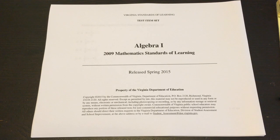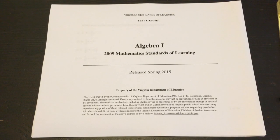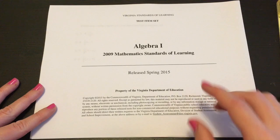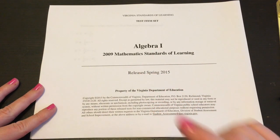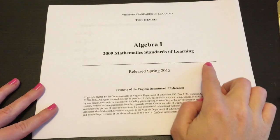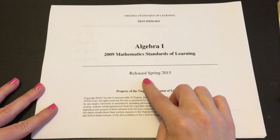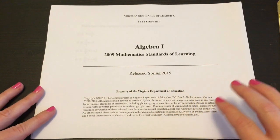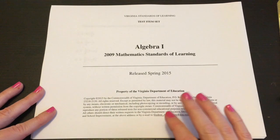Hi, Jessica here with Jacobs Tutoring Service. I'm going to go over today, I'm going to start a video series going through the Virginia SOL for Algebra 1. So what I've got here is the 2009 Mathematics Standard of Learning, so the SOL. This one was released in spring of 2015. So we're going to do a series of videos. The first video will go through questions one through five.